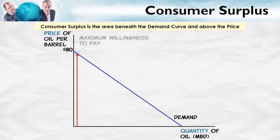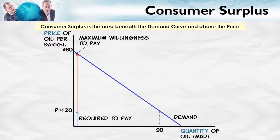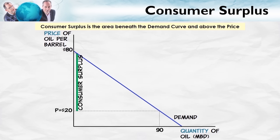Let's begin with the demand curve and pick a particular quantity. From our vertical reading, the height of the demand curve at that quantity gives the maximum willingness to pay for that particular barrel of oil. In this case, the maximum willingness to pay is a little bit below $80. Now suppose the price of a barrel of oil is $20 per barrel. The willingness to pay is close to $80, but the actual price is only $20 — so the person pays $20 for something they value at close to $80. The difference between the maximum willingness to pay and the actual price is consumer surplus, which here would be a little less than $60. We can indicate this consumer surplus by the green area on the diagram.